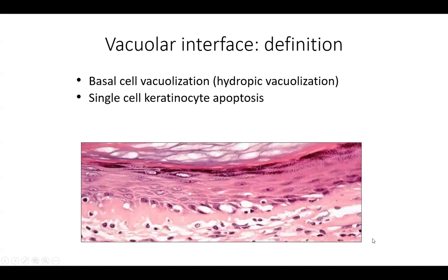Vacuolar interface is a second type, defined by basal cell vacuolation — hydropic change with little white vesicles forming inside keratinocytes. The etiology of vacuolar interface is quite broad, which we'll discuss. Single-cell keratinocyte apoptosis is also very common in this pattern.